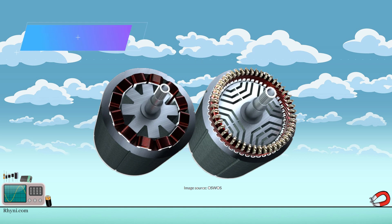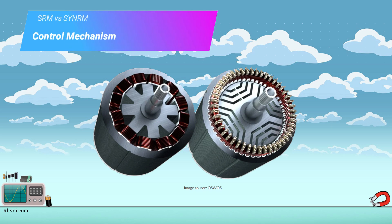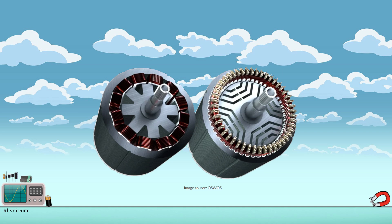Control mechanism. The synchronous reluctance motor requires a complex control mechanism, including a feedback sensor, to operate effectively. On the other hand, the switched reluctance motor can operate without a feedback sensor, making it less complex.